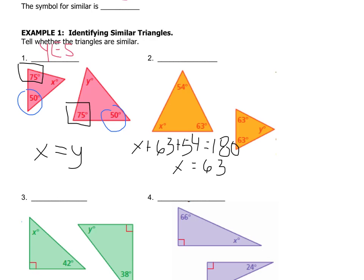So that means this is now 63. If I come over to my little triangle, I have 63 plus 63 plus y equals 180, which makes y equaling to 54 degrees.